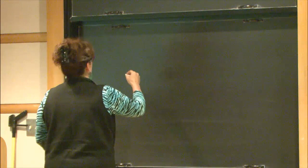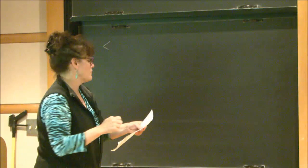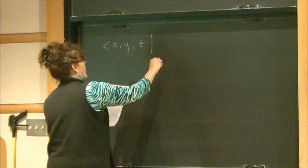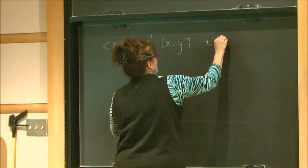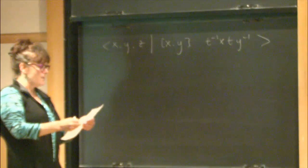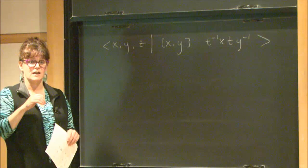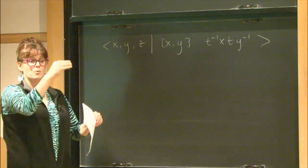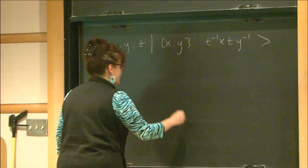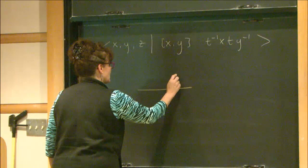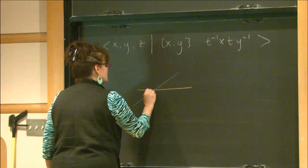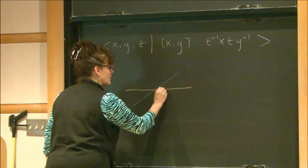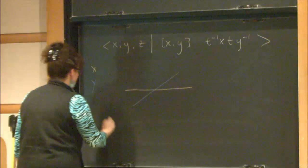I want to put up the example I had yesterday. I'll use different letters today — x, y, and z — because I want to do something else with this example. I had a commuting relation and one more relation of length four, so both relations were of length four. Then I started to draw a picture of the universal cover of the standard two-complex, just the one-neighborhood: what happens when I put on the first edges and the first two-cells.